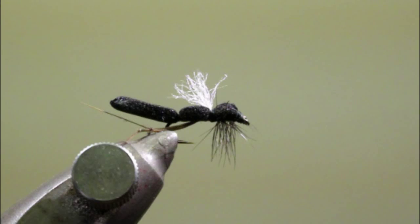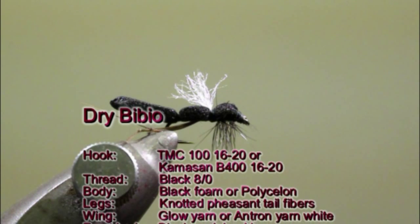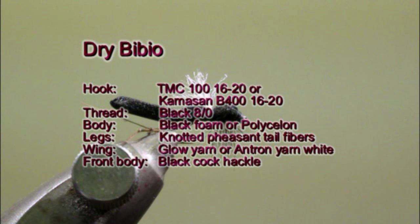To tie this fly we will use a Tiemco 100 or Camazan B400 in size 16 up to 20, a black medium tying thread. For the body we will use black foam or polycelon. The legs will be made with knotted pheasant tail fibers. For the wing we will use a white glow yarn or an entron yarn, and the front body will be made with a black cock hackle.